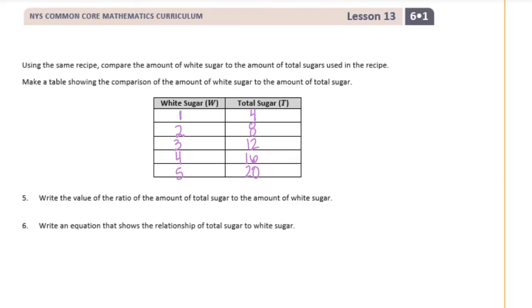So the value of the ratio of total sugar to white sugar — the ratio of total to white is four to one, so the value is four over one, or we could just leave it as four.